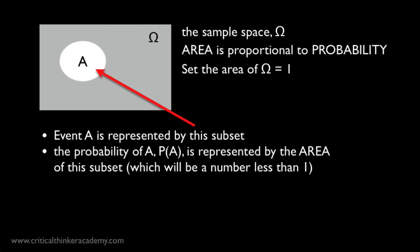So let event A be represented by this area. The probability of A is proportional to the area of this subset. The larger the area, the more probable the event. If the area of A includes the whole sample space, omega, then the probability would be 1. That event would happen with certainty. In general, this will be a number less than 1.